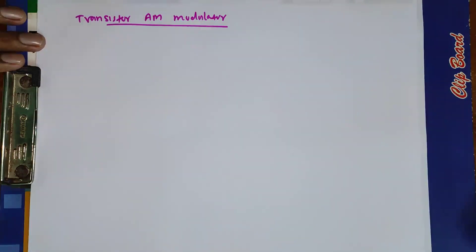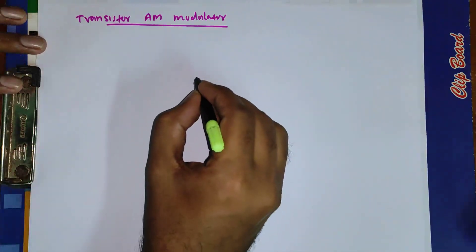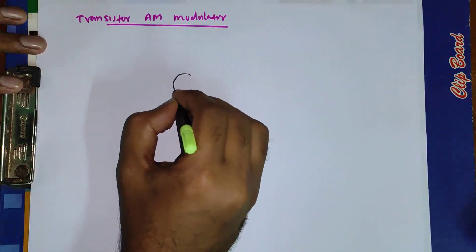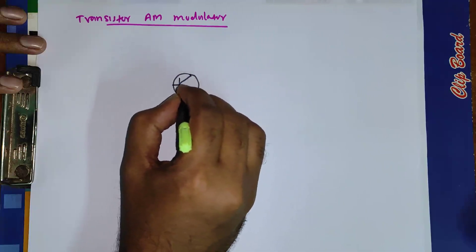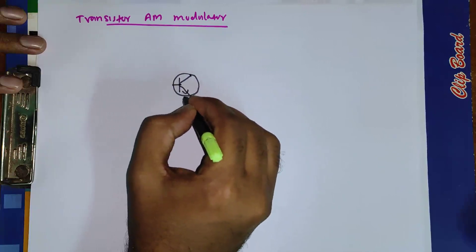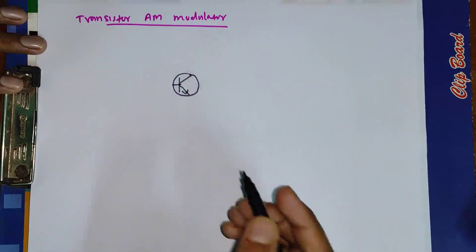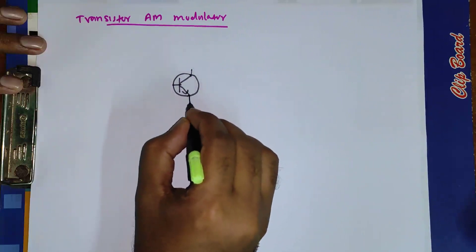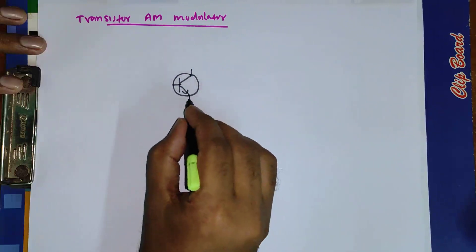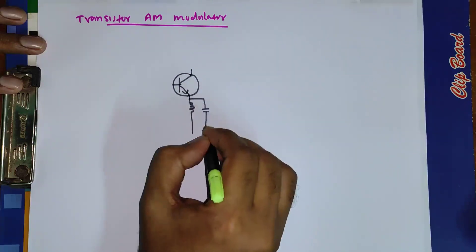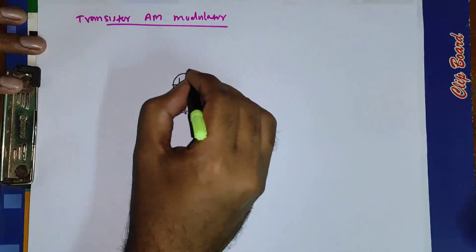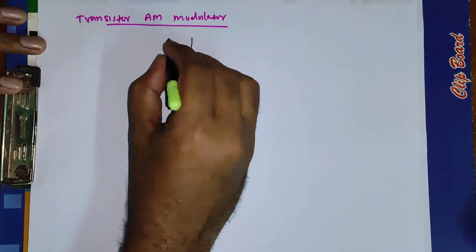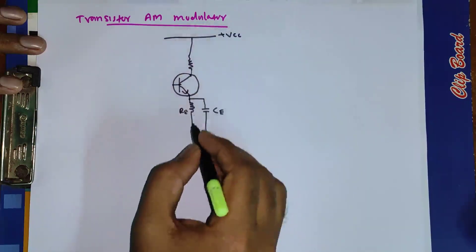Let us draw the circuit diagram of a transistor AM modulator. As the name implies, first we need a transistor. A transistor is a three terminal device. You have a base, emitter and collector. Now in the emitter you will have an emitter resistance RE and a capacitor CE. Now you have a collector resistance RC, connected to plus VCC and here you will have ground.